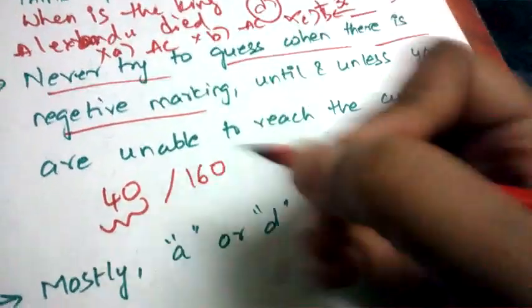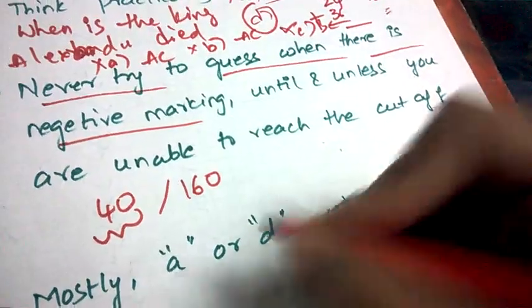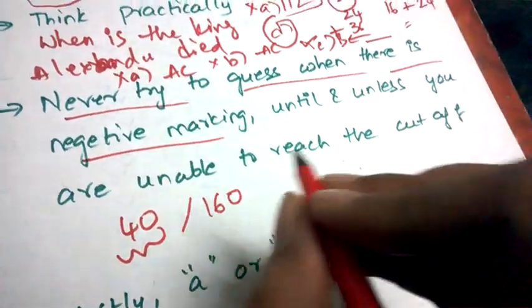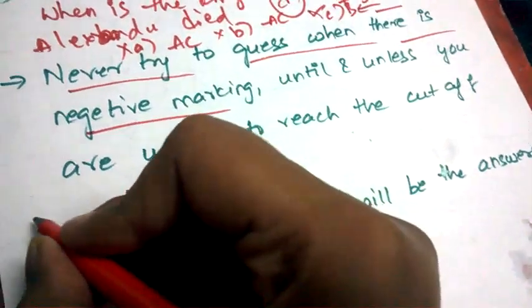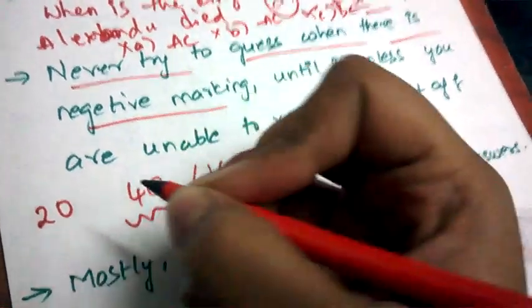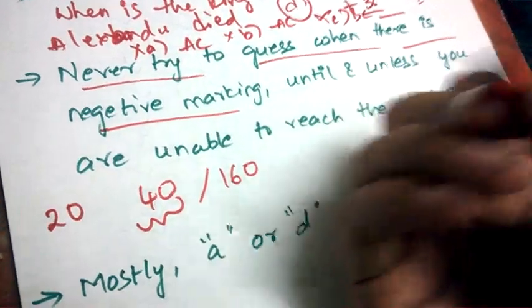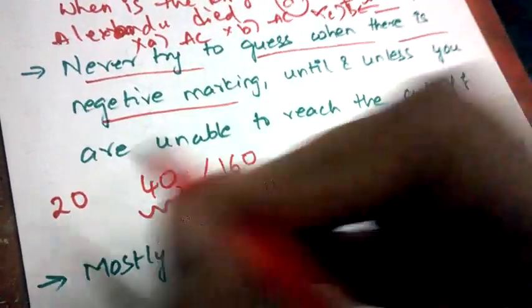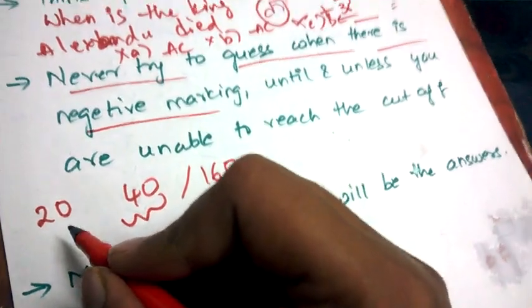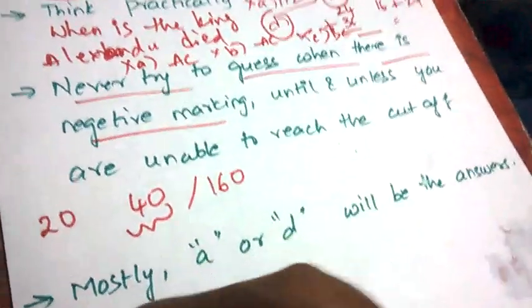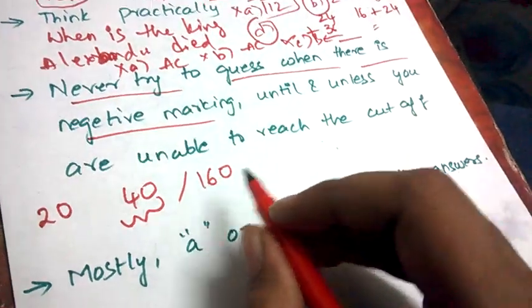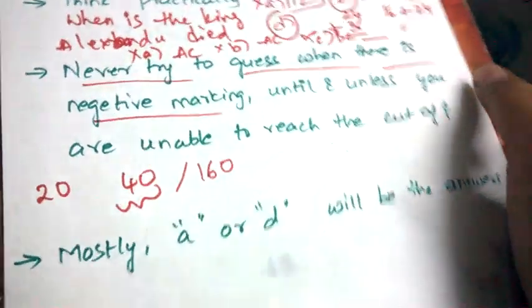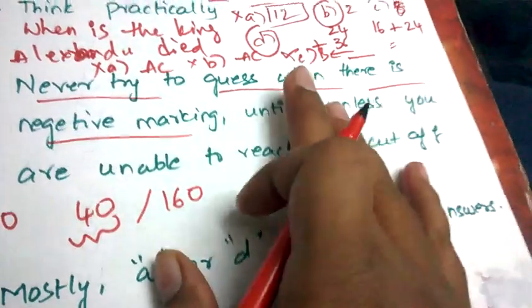For example, the whole paper is out of 160, cutoff marks is 40. You need to at least get 40 marks out of 160 as a cutoff. And you are unable to cross this cutoff, you only wrote some 20. Obviously you're going to disqualify for the exam. In this type of situation only you take the risk of guessing, otherwise please don't guess. Because if there is negative marking there may be a chance of losing marks also if you guess. Keep this in mind.